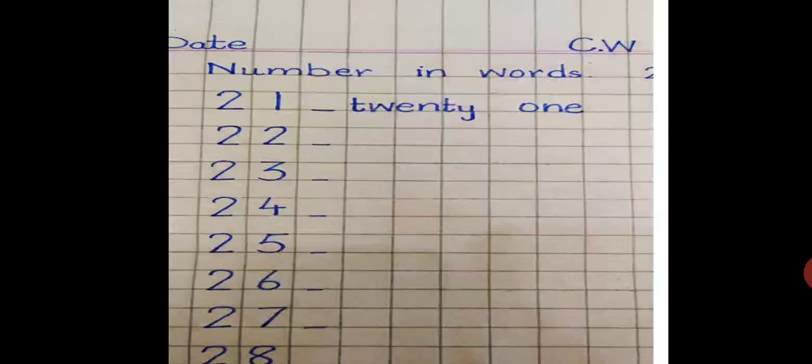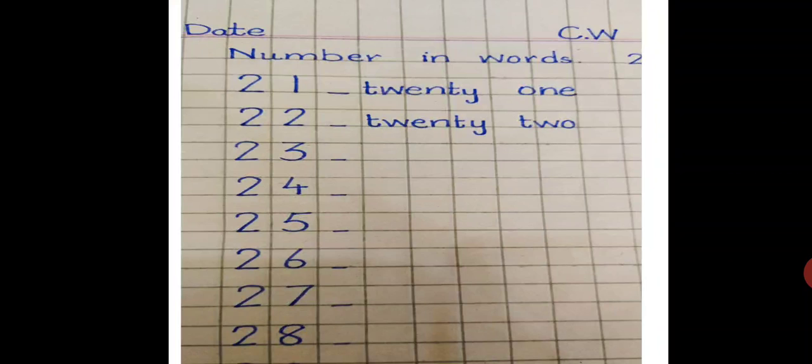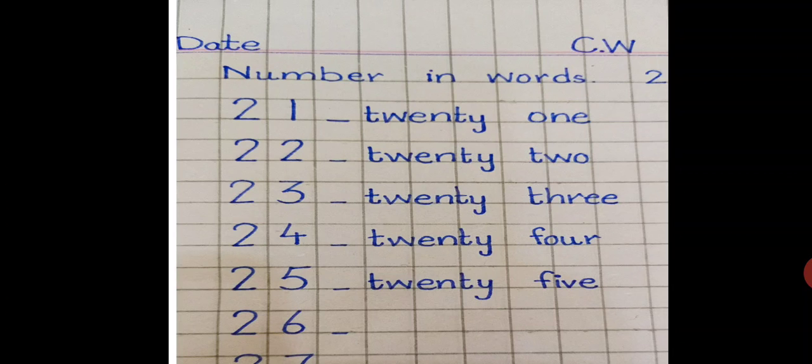Twenty: t-w-e-n-t-y, 20. Take one finger gap. T-w-o, 2. Twenty-two. What comes after 22? 23. Again, t-w-e-n-t-y, 20. Take one finger gap. T-h-r-e-e, 3. Twenty-three.